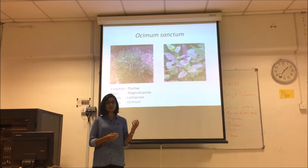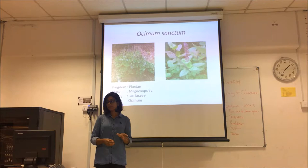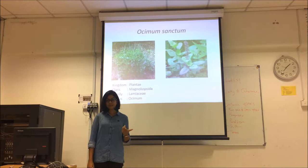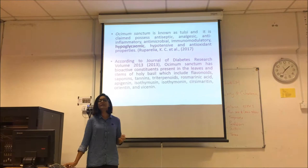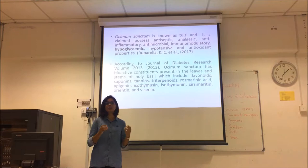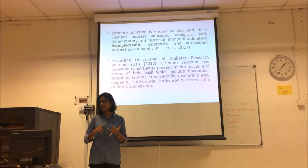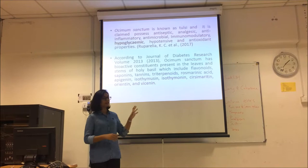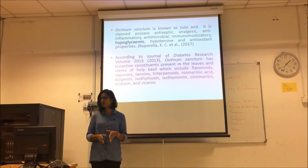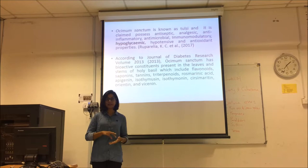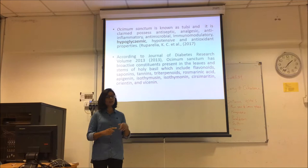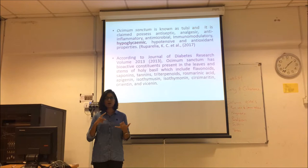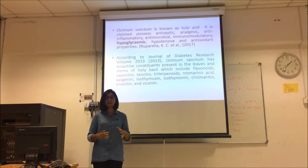I want to introduce a plant commonly found at home, called Ocimum sanctum. It is from kingdom Plantae, class Magnoliopsida, family Lamiaceae, and genus Ocimum. It is known as tulsi by Indians and is usually found in Southeast Asia. It is claimed to possess antiseptic, analgesic, anti-inflammatory, anti-microbial, immunomodulatory, and hypoglycemic properties — hypoglycemic being the focus of this research. According to the Journal of Diabetes Research volume 2013, Ocimum sanctum has bioactive constituents including flavonoids, saponins, tannins, and triterpenoids, which are very good for antioxidant and hypoglycemic properties.